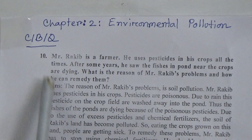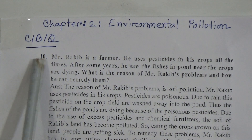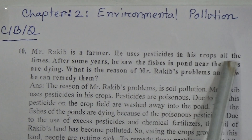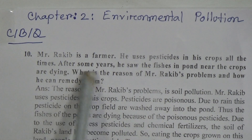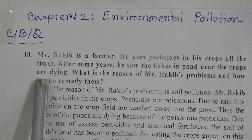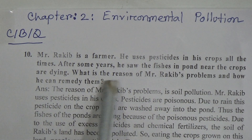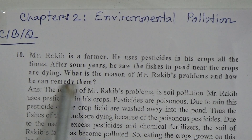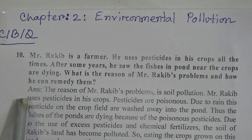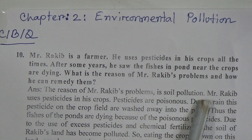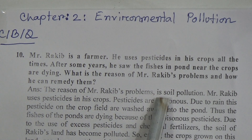Question 10: Mr. Rakib is a farmer. He used pesticides in his crops all the time. After some years he saw the fishes in the pond near the crops are dying. What is the reason of Mr. Rakib's problem and how can he remedy them? The reason of Mr. Rakib's problem is soil pollution and water pollution — you can write soil and water pollution.